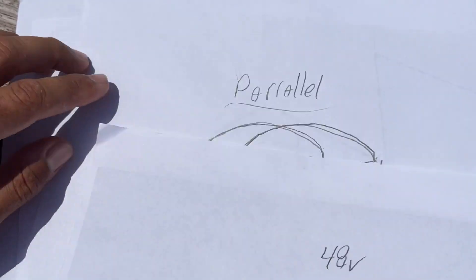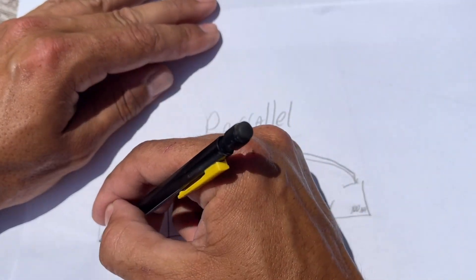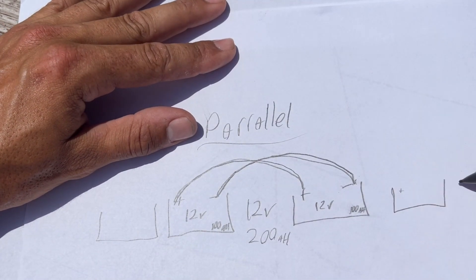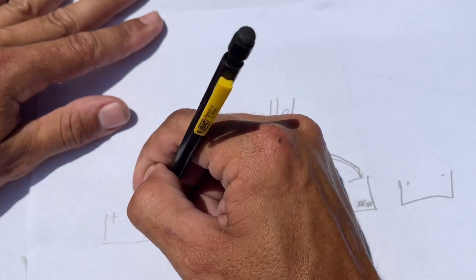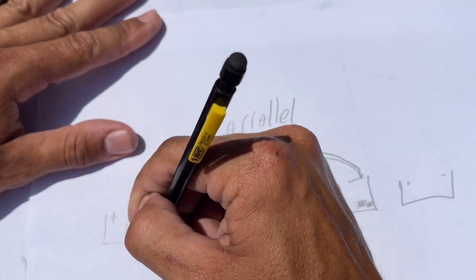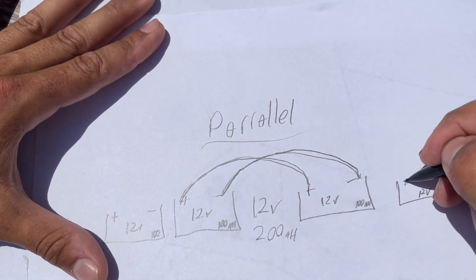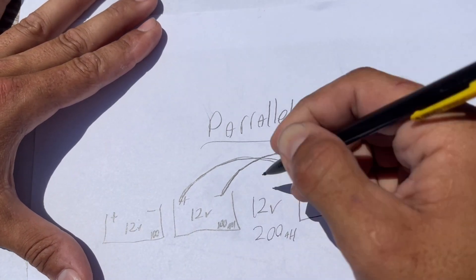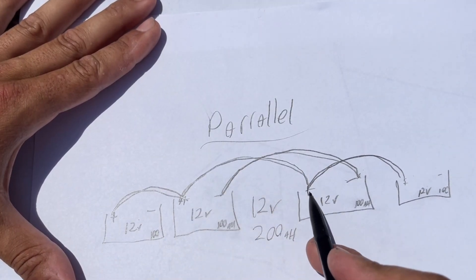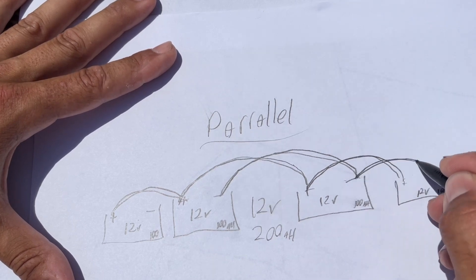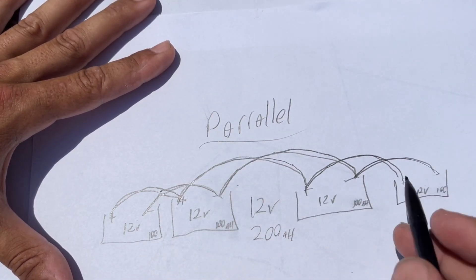And again, same thing going back to our parallel connection. If we were to add two more batteries or whatever we're calling these, if these are solar panels, batteries, whatever the case is, and these are 12-volt 100. And again, you connected all of your positives together. So, positive to positive, all the way to the next positive, to the next positive, and you had your negatives connected, so negative, negative, negative, negative are all connected.